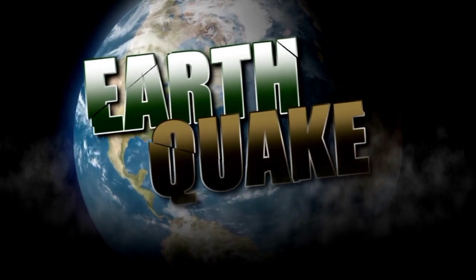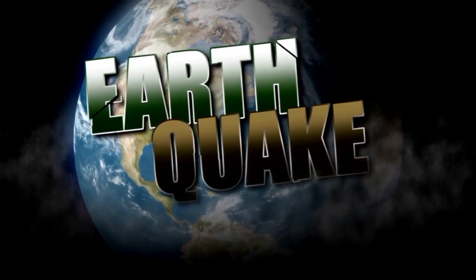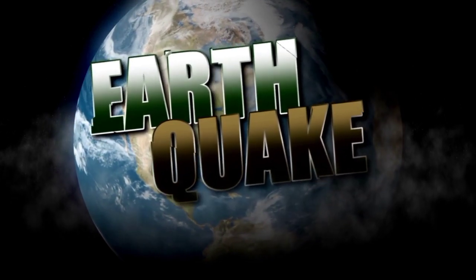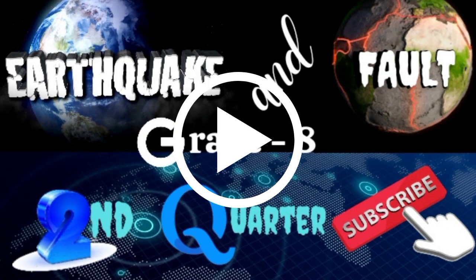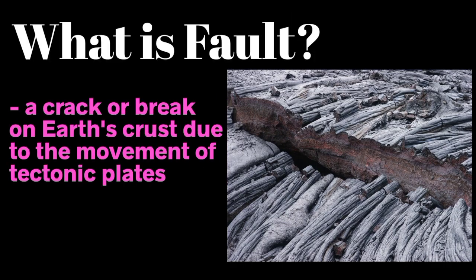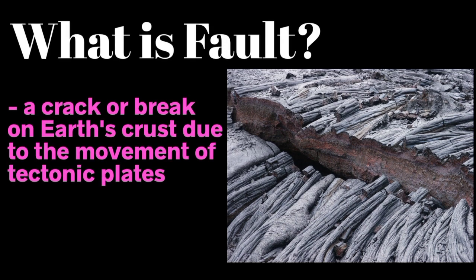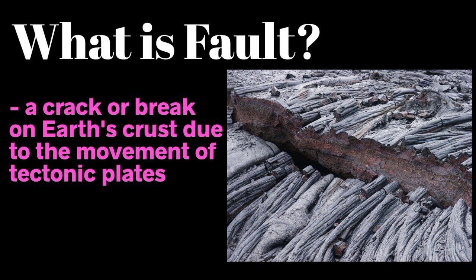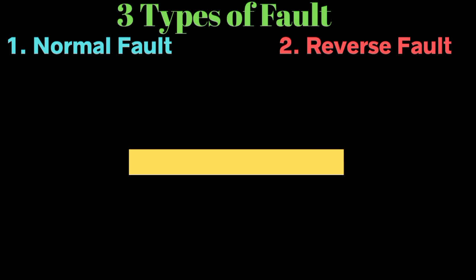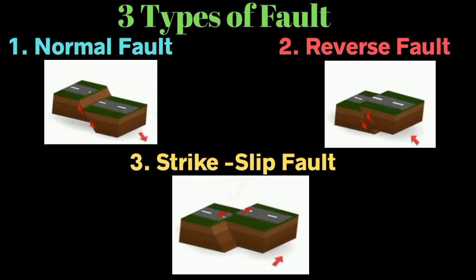In our previous video, you learned about earthquakes and faults. If you haven't watched it yet, you can pause this video and watch it for better understanding of our lesson. Do you still remember what a fault is? A fault is a crack or break in Earth's crust due to the movement of tectonic plates. When tectonic plates move along fault lines, energy is released that causes an earthquake. A fault has three types based on relative motion of the plates: normal fault, reverse fault, and strike-slip fault.